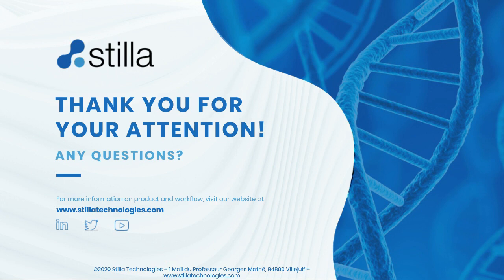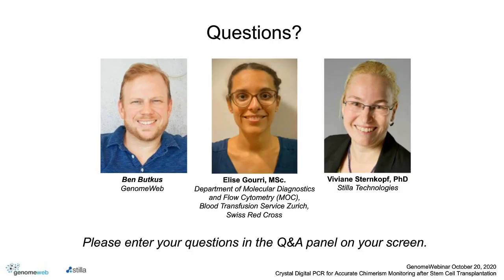Thank you again, Viviane. As a reminder to webinar participants, if you have a question, please type it into the Q&A box in the control panel. We'd also like to ask attendees to take a moment after the webinar has ended to take our exit survey and give us your feedback. We'll now begin the Q&A portion of the webinar. The first question is for Elise: other than indels or CNVs, could you simply use HLA variations — either by PCR or even flow cytometry — to monitor chimerism?